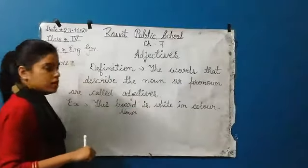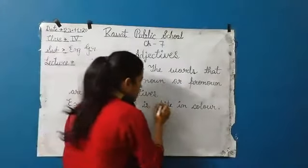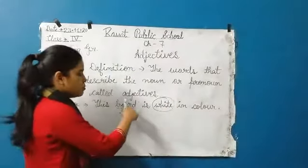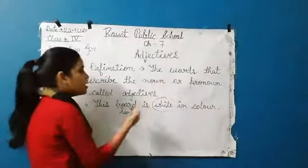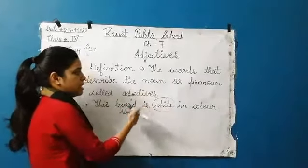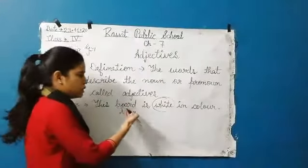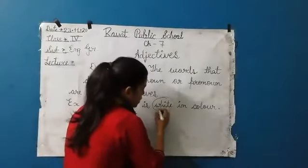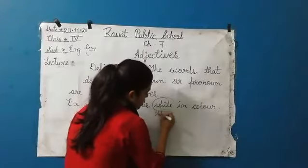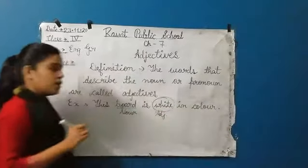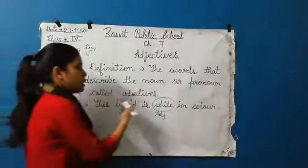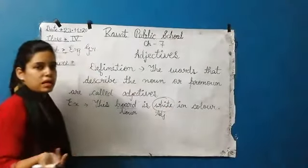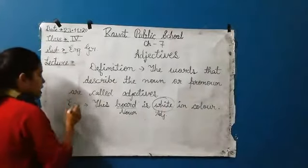Now, this board is white color. I'm telling you about the definition using this example: this board is white color. So here, what is 'white'? White is an adjective — any word that tells us about the noun or pronoun is an adjective.